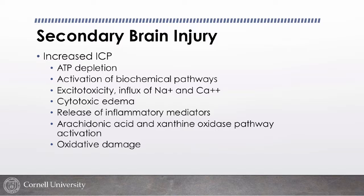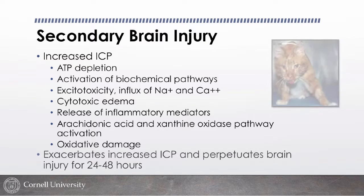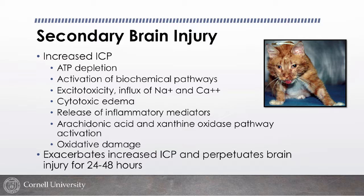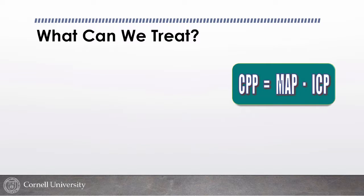The key formula: Cerebral Perfusion Pressure (CPP) = Mean Arterial Pressure (MAP) − Intracranial Pressure (ICP). If MAP is held constant and ICP rises, CPP falls. So the goal is to maintain MAP and decrease ICP to optimize brain perfusion. Earlier thinking was to raise MAP to super-physiologic levels to compensate for elevated ICP, but a phase II clinical trial in people showed worse outcomes. Current recommendations: maintain MAP at the higher end of normal — just don't let it be low.